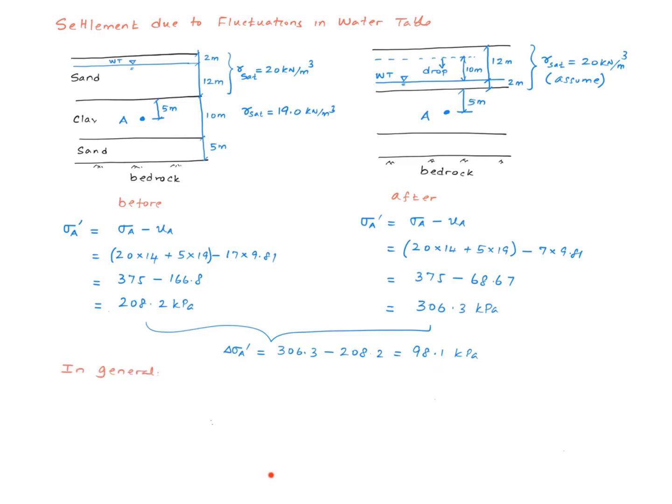So why did this happen? Well this happens because while the total stress at point A remaining the same, the pore pressure drops from 166.8 to 68.67. The difference, obviously, is the difference in the pore water pressure corresponding to 10 meter drop of water table.